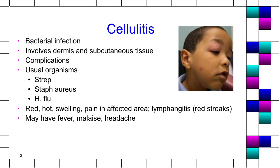Consider the anatomy: we have the lid, we have the eyeball itself that has a lot of vasculature — and what is behind that? The brain. Therefore a simple-looking infection like orbital cellulitis can actually turn into a brain abscess, and this is a very dangerous condition. The most common organisms that cause cellulitis are staph, strep, and Haemophilus influenzae.